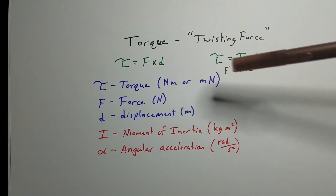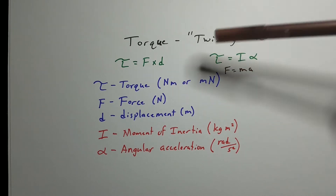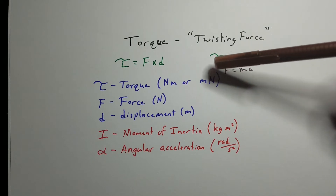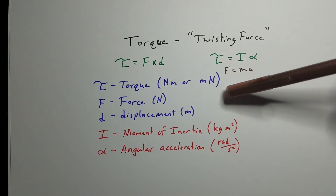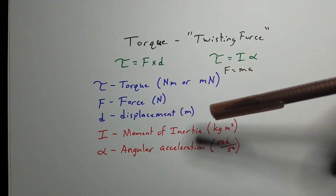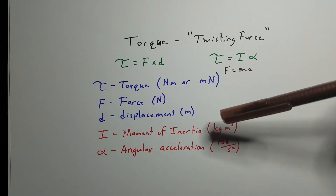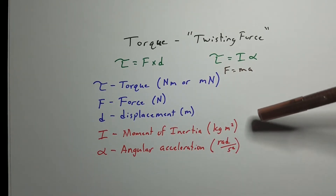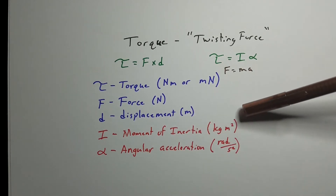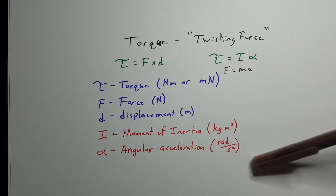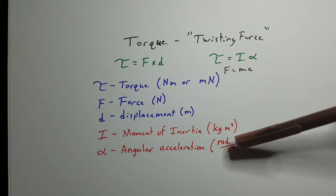We can find torque in a couple of ways. Units can be newton meters, or more recently meter-newtons — I think that comes from the English system where we call it foot-pounds. Force is in newtons, displacement is in meters. I is moment of inertia, and alpha is angular acceleration, which is in radians per second squared.